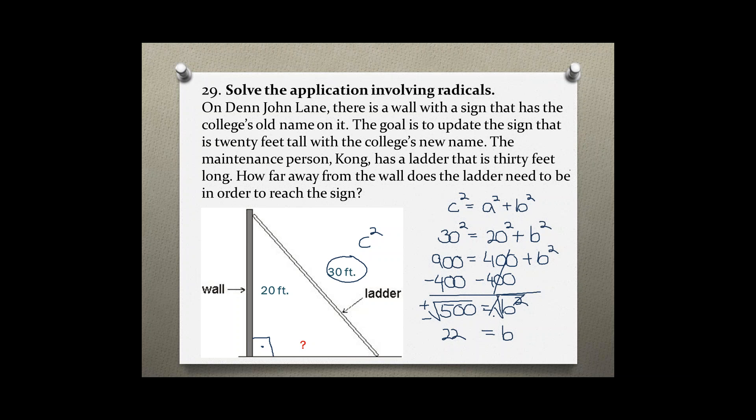This is a real world problem so we only need the positive value. You would get positive and negative 22 but a ladder cannot, the distance between the wall and the ladder cannot be a negative distance so it would be 22 positive. And we are having units in this problem so we have to put feet, 22.36 feet.